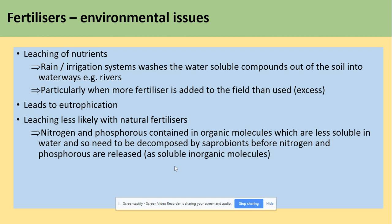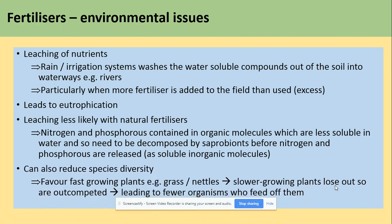With natural fertilizers, the nitrogen and phosphorus are contained in inorganic molecules which are less soluble. We need to focus on the word 'soluble' in this topic. They need to be decomposed before nitrogen and phosphorus are released. Excess nutrients can also reduce species diversity, as they favour fast-growing plants, meaning slower-growing plants are outcompeted, leading to fewer organisms that feed on them.